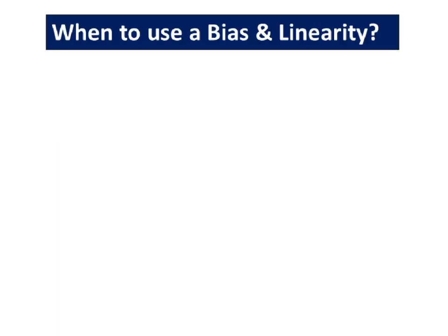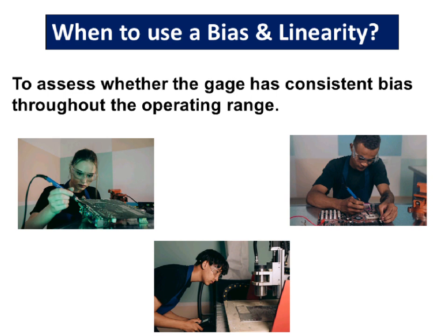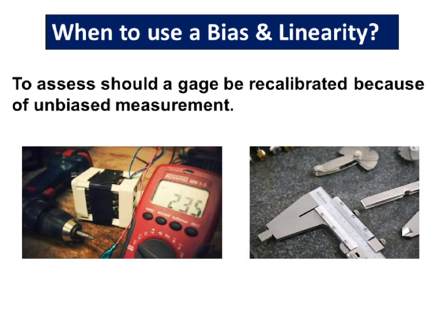When to use bias and linearity. Bias and linearity are used to assess whether the gauge has consistent bias throughout the operating range. Furthermore, bias and linearity is used to assess whether a gauge requires recalibrating because of unbiased measurement.